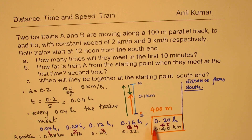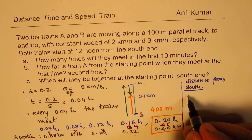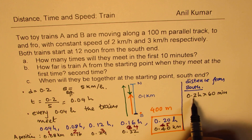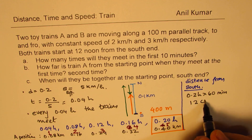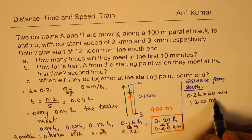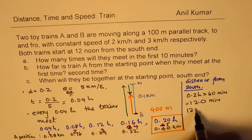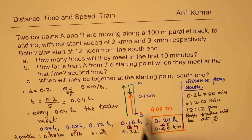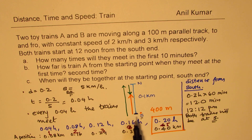The fifth meeting occurs at 0.20 hours. Converting: 0.2 × 60 = 12 minutes. So at 12:12 p.m. — that is, 12 minutes after starting — both trains will be together at the south starting point.